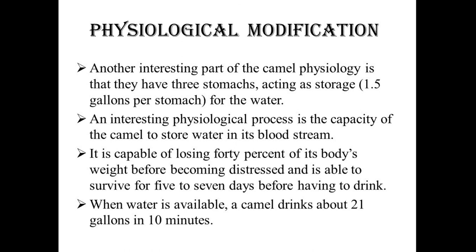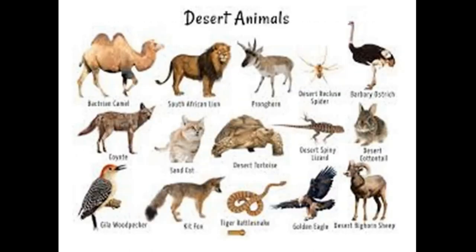Camels are pseudo-ruminant animals with pouch-like stomach structures that serve for water storage. A camel is capable of losing 40% of its body weight before becoming distressed and can survive 5 to 7 days before needing to drink. When water is available, a camel can drink about 21 gallons in 10 minutes, or approximately 30 gallons within 15 minutes. The camel's mouth, stomach, and teeth are well adapted to eat plants not palatable to other desert animals. The hump contains not only fats but also minerals and vitamins for energy storage.